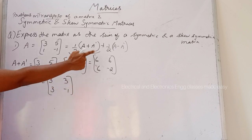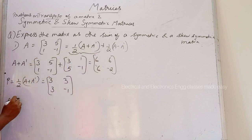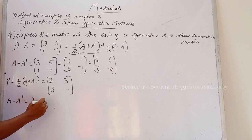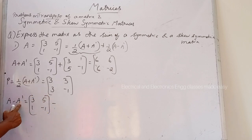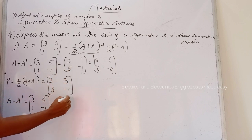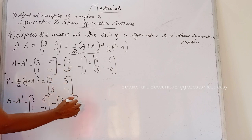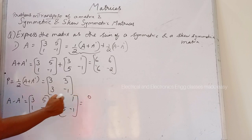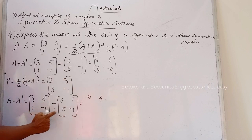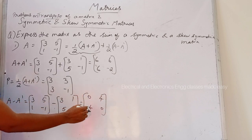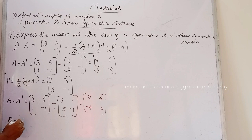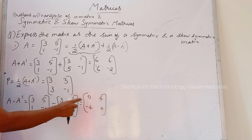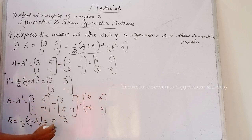Let P equal half of (A + A transpose). Taking half of each element gives P = [3, 3; 3, -1]. For the second term, A minus A transpose: 3-3=0, 5-1=4, 1-5=-4, -1-(-1)=0, giving [0, 4; -4, 0]. Let Q equal half of (A - A transpose), so Q = [0, 2; -2, 0].